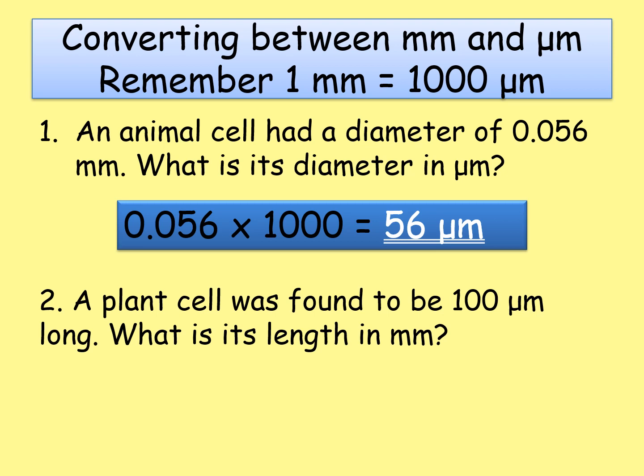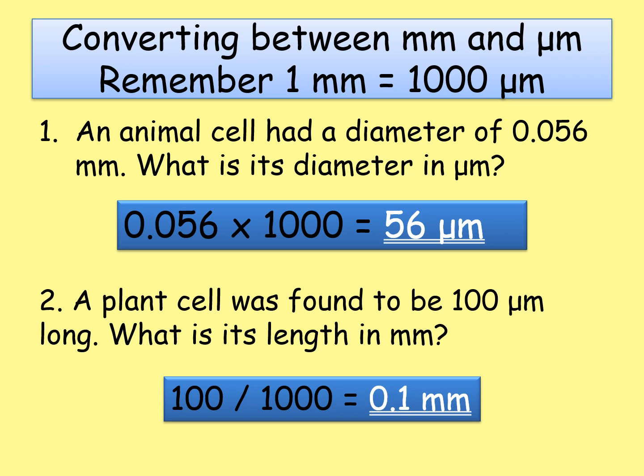Now for number two: a plant cell was found to be 100 micrometres long. What is its length in millimetres? Pause the video and have a go. We're converting from micrometres back to millimetres, so instead of multiplying we divide: 100 ÷ 1000 = 0.1 millimetres. That's your first skill done.